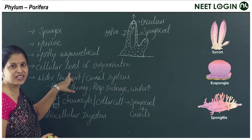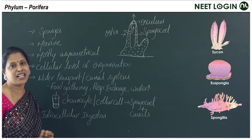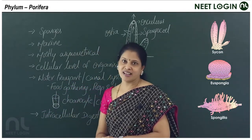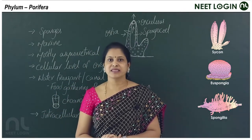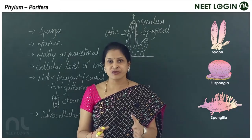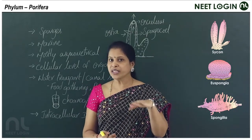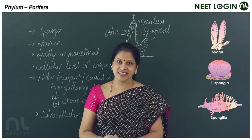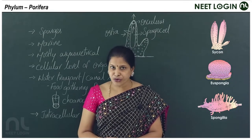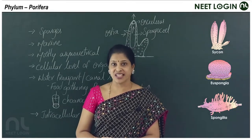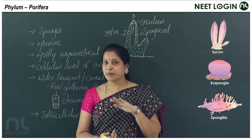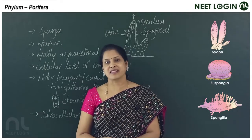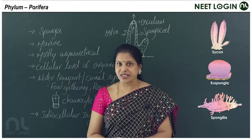The level of organization in poriferans is the cellular level of organization. No animal is unicellular — all animals are multicellular. Though their body is made up of many cells, the cells are loose aggregates, making this the most primitive level of organization. These are the earliest metazoans — the sponges.